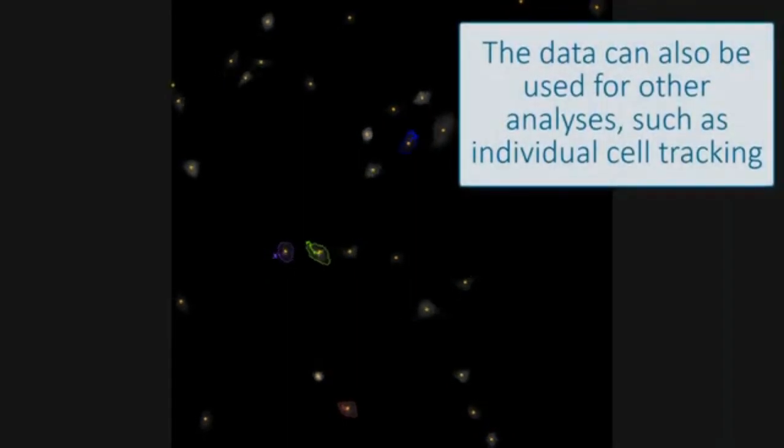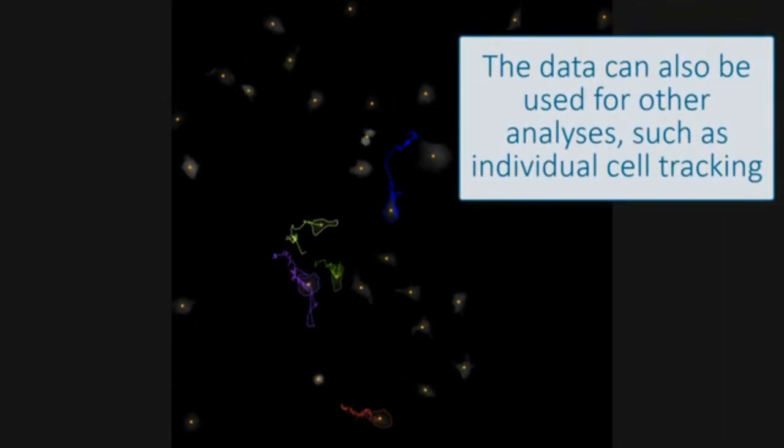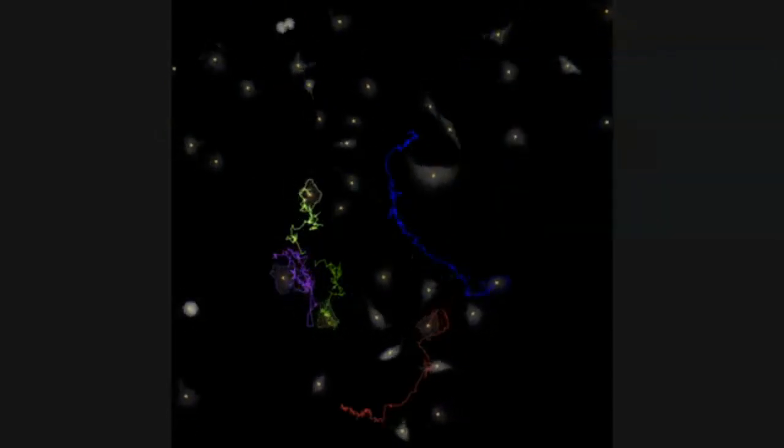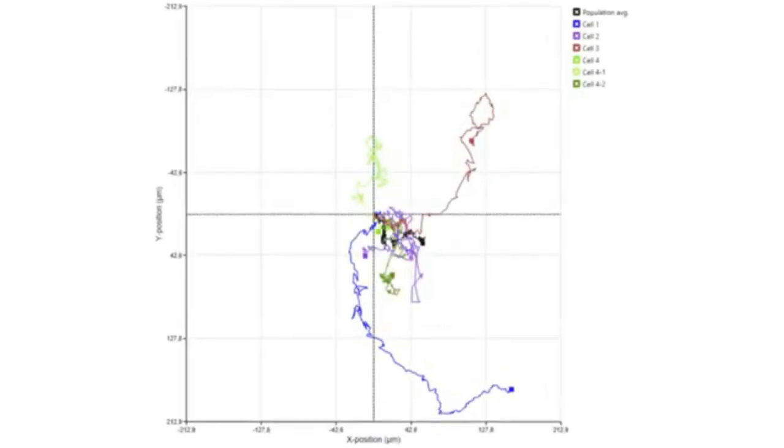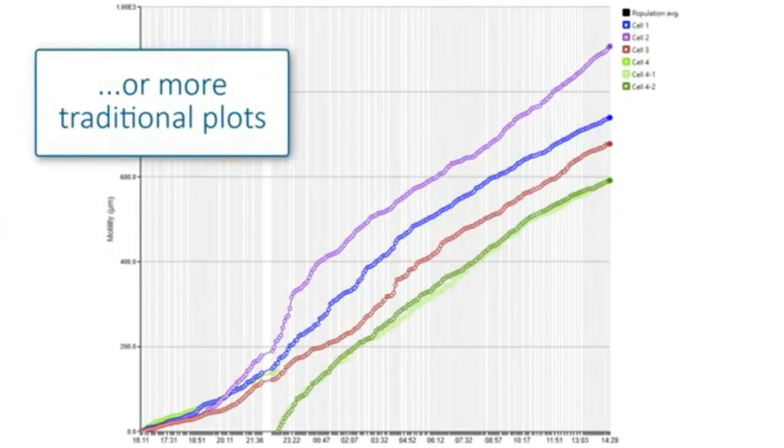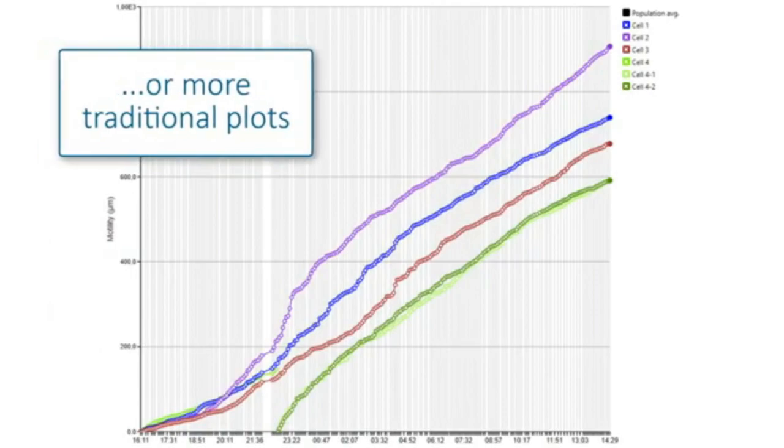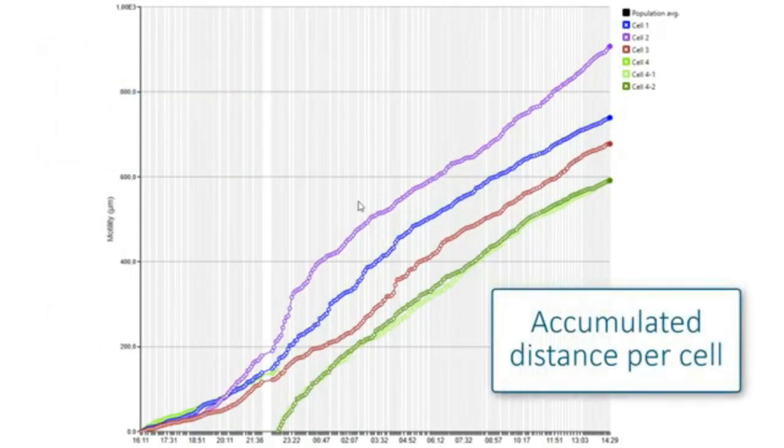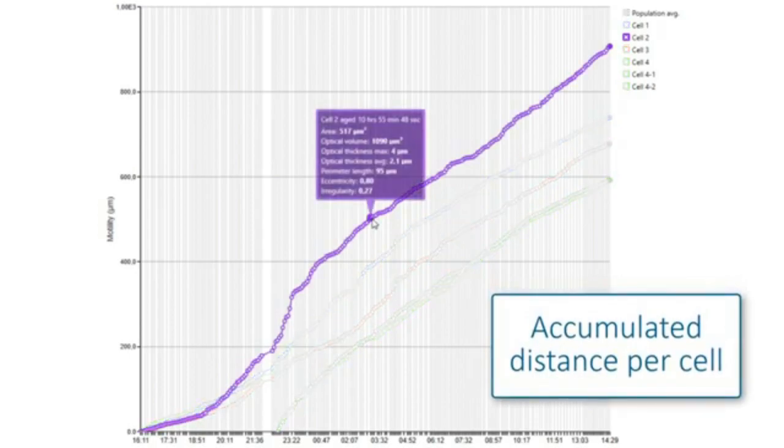The images and data from one experiment can be used for other analysis as well. For example, you can track individual cells. The software generates a cell movement plot. You can also get a more traditional plot where any parameter can be plotted against time. Here, the accumulated distance traveled by each tracked cell is shown.